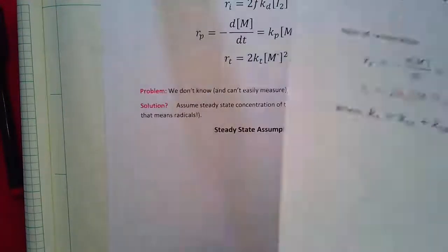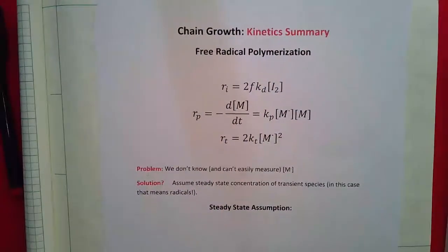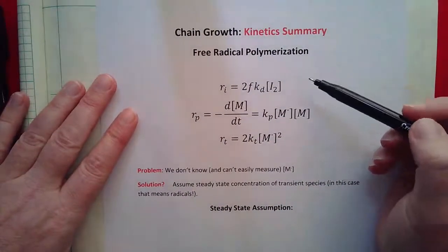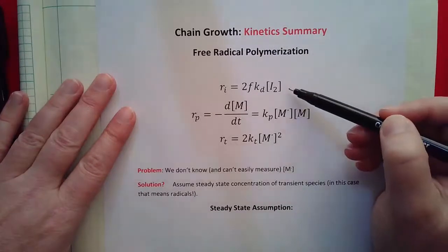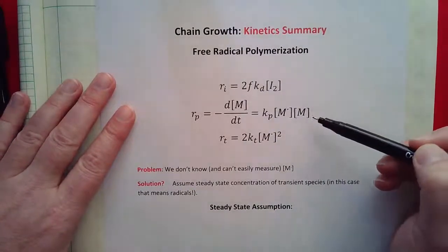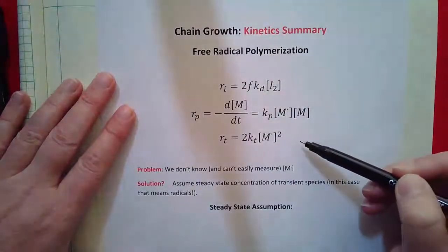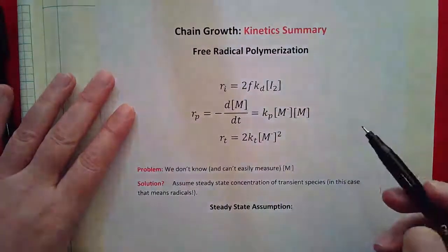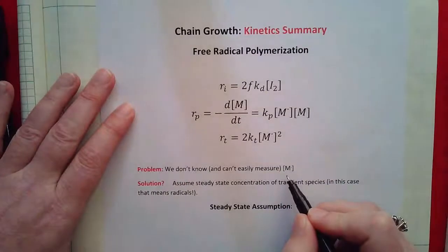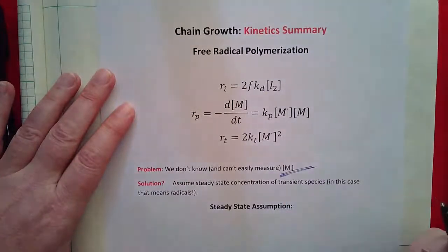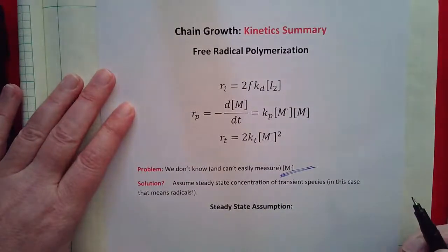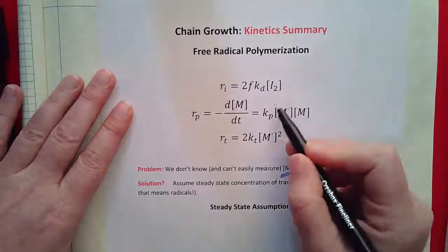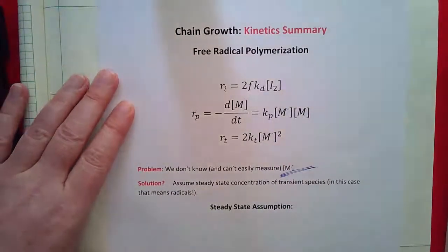So let's take a look at those rate laws. Here's our free radical polymerization: we know our rate of initiation, our rate of propagation, and our rate of termination. We have a big problem — we don't know what the active species concentration is, and it is difficult to measure. So we would like to eliminate it from our equations.